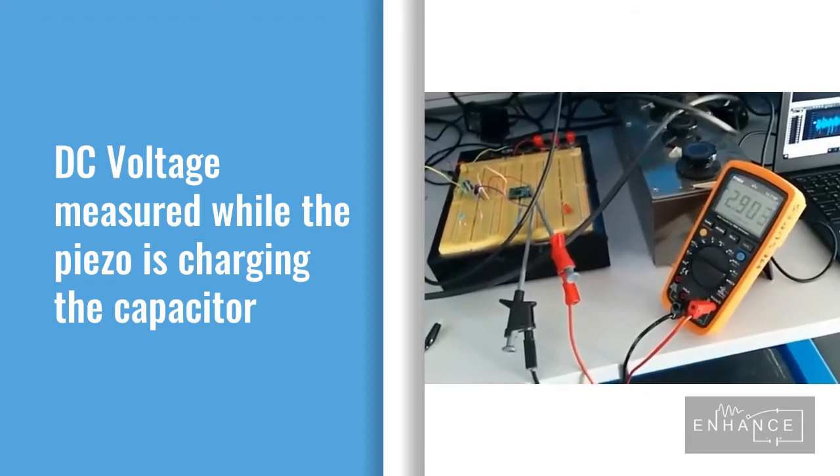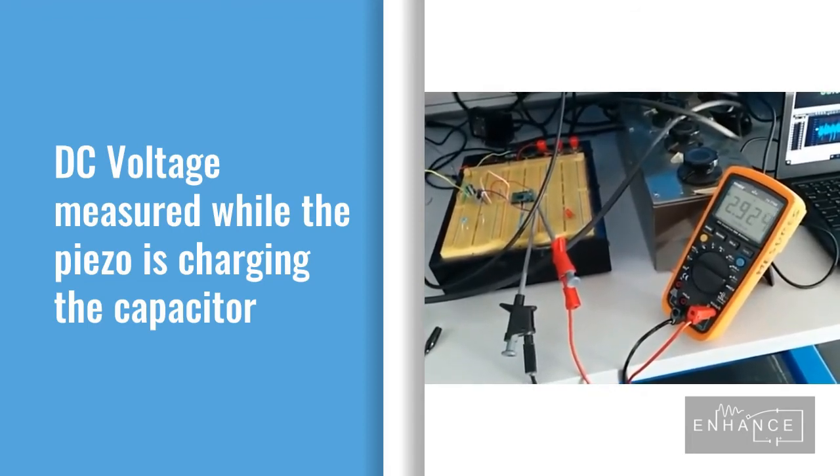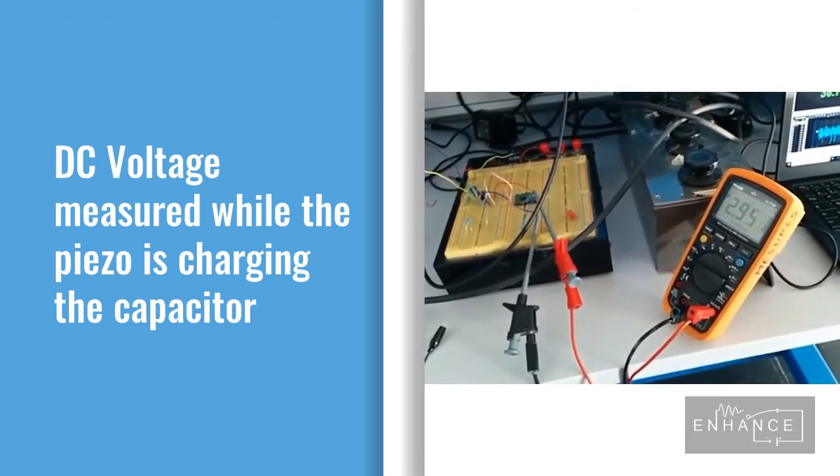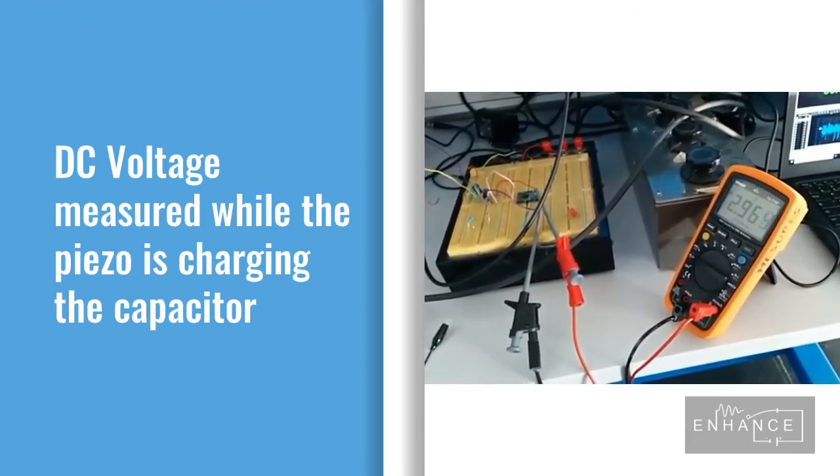With the multimeter we are monitoring the charging process of the capacitors in the circuit. Once the voltage is above 3 volts we can actually power up the radio frequency sensor.